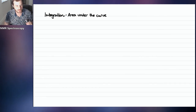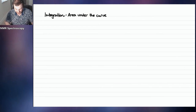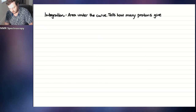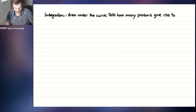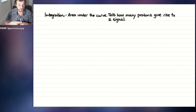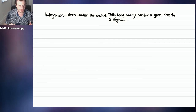The key here is that the size of the peaks vertically in an NMR doesn't really matter, and the width doesn't matter either. It's the area under the curve that matters. The area under the curve tells us how many protons are giving rise to a certain signal. If two protons are in the same chemical environment, they give one signal, but the area under that curve will be doubly large compared to a peak from just one proton.